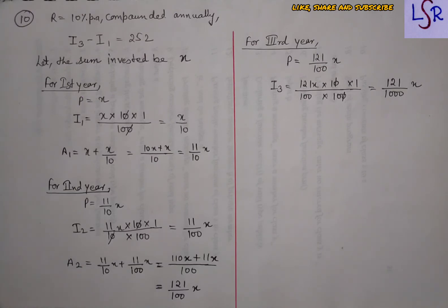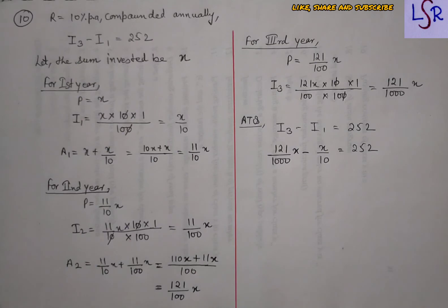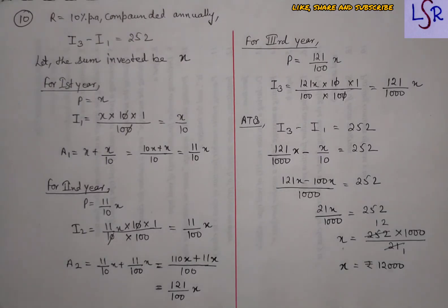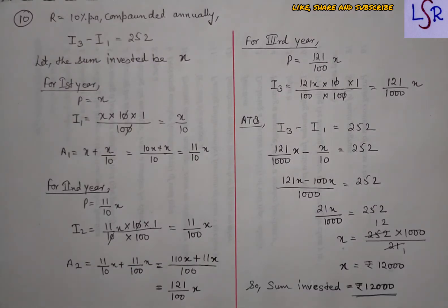From the question, I3 − I1 = 252. Taking the difference of 121X/1000 and X/10 and setting it equal to 252, we solve for X and get X = 12,000. So the required sum invested is rupees 12,000.